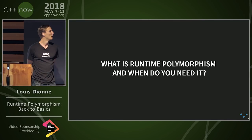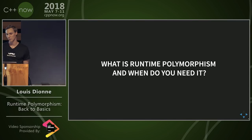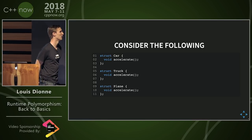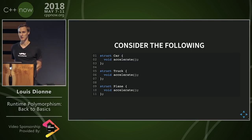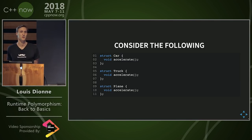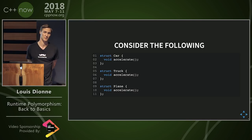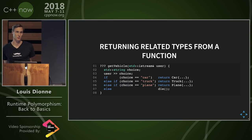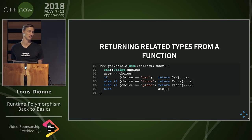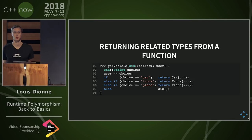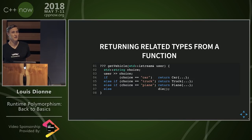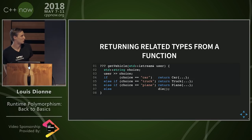Before we spend an hour and a half talking about polymorphism, we should know what it is. So imagine you have a set of classes related by their interface — they all have an accelerate method, or could be something else like draw. And imagine you want to return an object of any one of these types from a function — that's easy, except if you don't know what type you're returning at compile time, if it depends on user input or something like that. Then you can't just return either a car, a truck, or a plane.